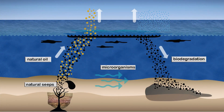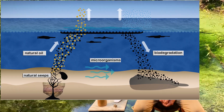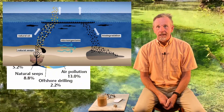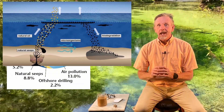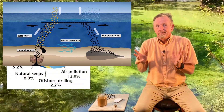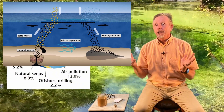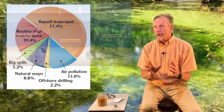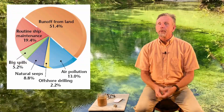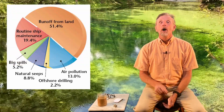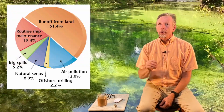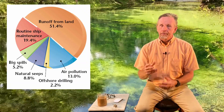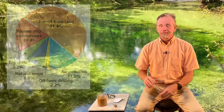Natural seepage of oil — it's underground and leaks up into the oceans — is 8.8%. So just natural seepage is worse than oil spills, but we tend to worry about the risk of oil spills.